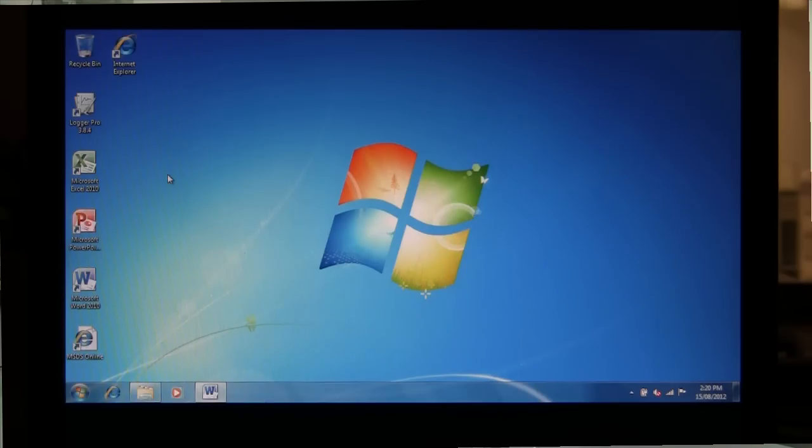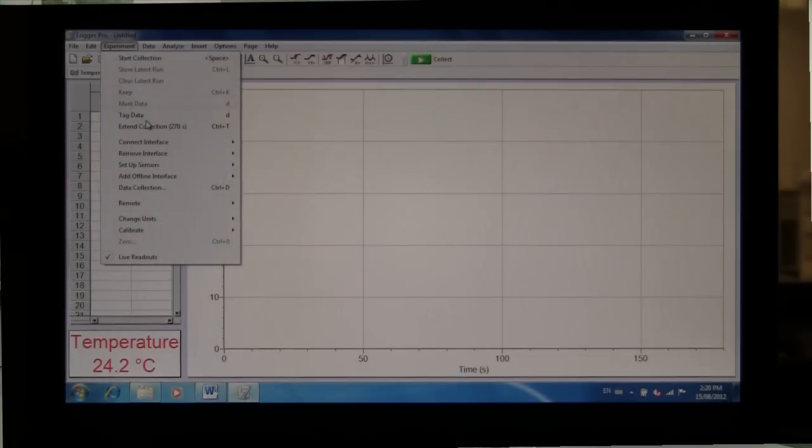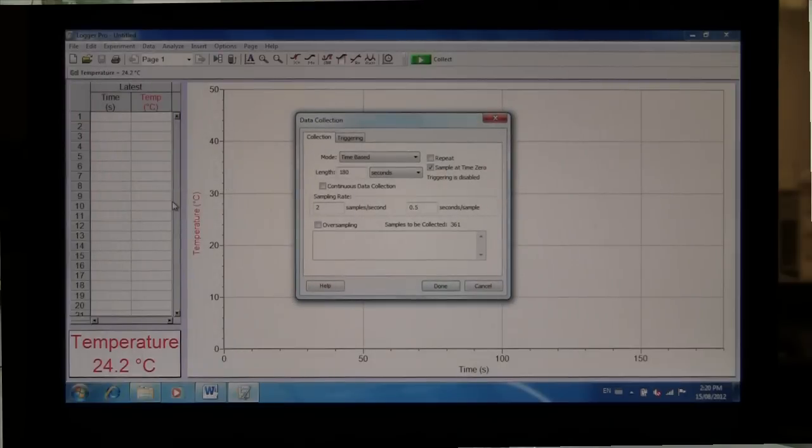So we're first going to load up the Logger Pro software on the laptop and we're going to set up the collection method. We're going to go into experiment and then select data collection and a window like this will pop up. You're going to change the length to 300 seconds and the sampling rate to one sample per second. And also check to make sure that continuous data collection is checked and select done.